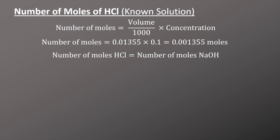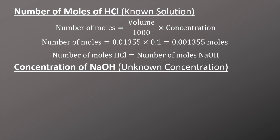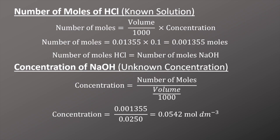From the previous slide, the number of moles of hydrochloric acid equals the number of moles of sodium hydroxide, so I can now calculate the concentration of sodium hydroxide, our unknown concentration. To do this I use the equation: concentration = moles ÷ (volume ÷ 1000). Putting the numbers in, I've got 0.001355 divided by 0.025, which is the volume of sodium hydroxide. This equals 0.0542 mol dm⁻³.